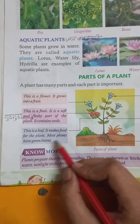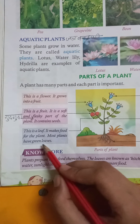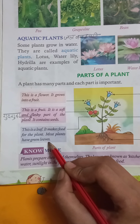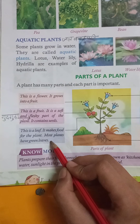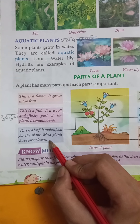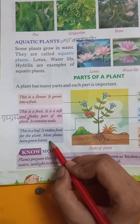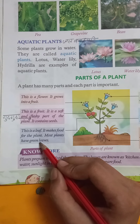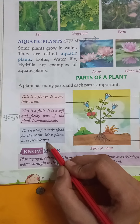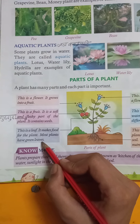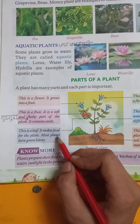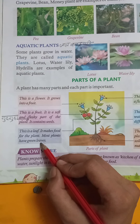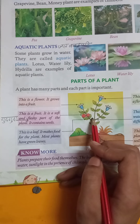Most plants have green leaves. The leaves are green and make food for the plant.